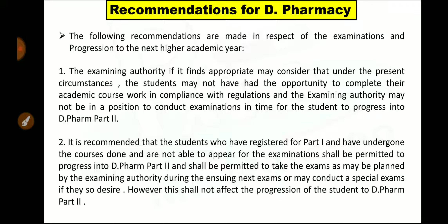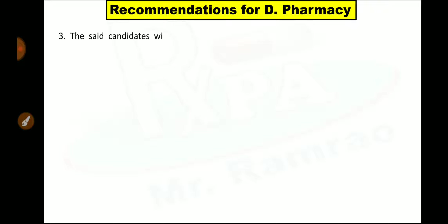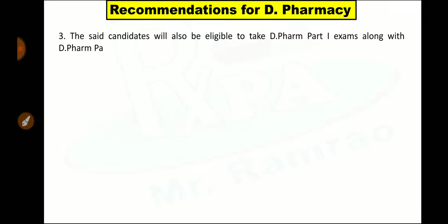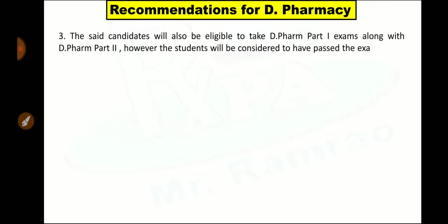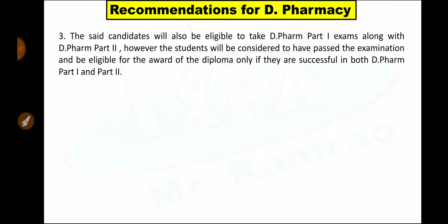However, this shall not affect the progression of the student to D Pharm Part 2. This means if you are in D Pharmacy first year, you will be directly moved to D Pharmacy second year, but you will be able to give that examination after that. About these examinations, the examining authority — like in Maharashtra, MSBT is the examining authority for the D Pharmacy course — will decide how and when to conduct the examination for D Pharm Part 1. The said candidate will also be eligible to take D Pharm Part 1 exams along with D Pharm Part 2. However, the student will be considered to have passed and be eligible for the award of diploma only if they are successful in both D Pharm Part 1 and Part 2.